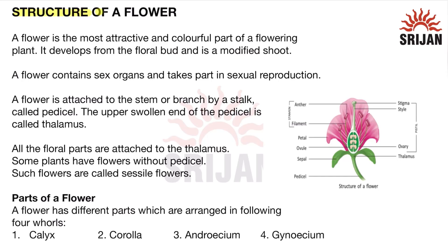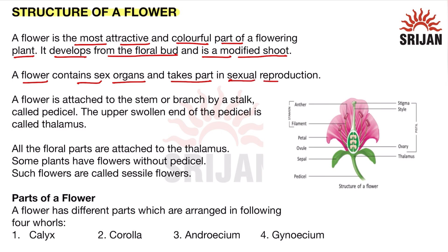The topic is the structure of a flower. A flower is the most attractive and colorful part of a flowering plant. It develops from the floral bud and is a modified shoot. A flower contains the sex organs and takes part in sexual reproduction, playing a very important role in it.